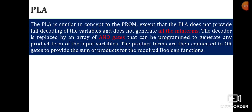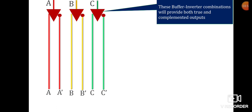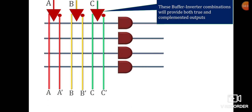With the flexible AND array we can achieve any combination or OR operation of the product terms. The first thing in designing a PLA is the buffer-inverter combination. It is not a normal inverter — it is a buffer-inverter. With this you can get both the true value and the complemented value of a variable. For three variables A, B, C, you can have A and A-bar both, using this buffer-inverter combination. After having these inputs, we have the AND array, which is also programmable.